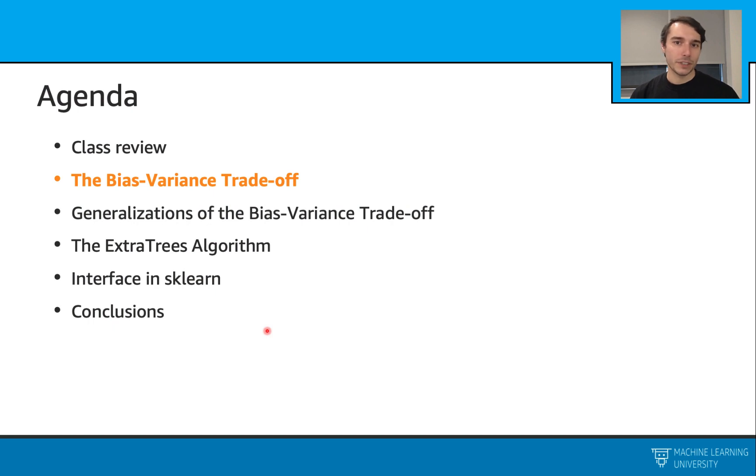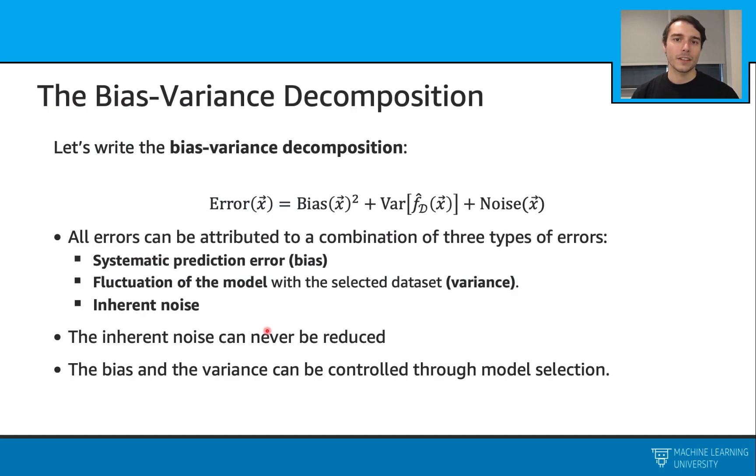In this section, we'll talk about bias-variance trade-off. Bias and variance are important things when it comes to the overall error. Here we'll first look at this bias-variance decomposition. With this decomposition, we can show that we can write our errors in terms of a bias-squared term plus variance term plus noise term.